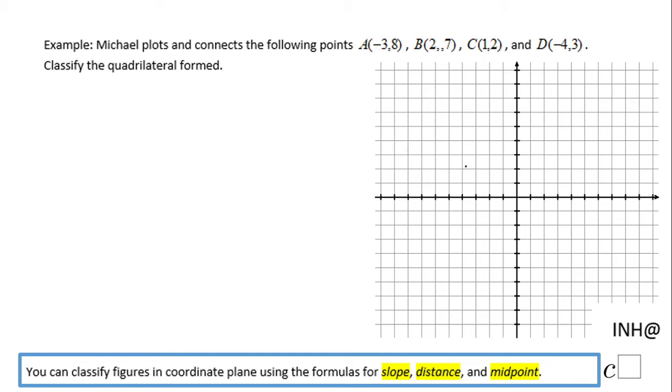The first point is negative 3 and 8. That means I'm gonna go 3 left and 8 up: 1, 2, 3, 4, 5, 6, 7, 8, right here. This is point A.